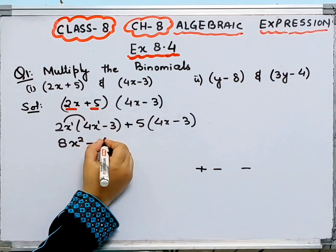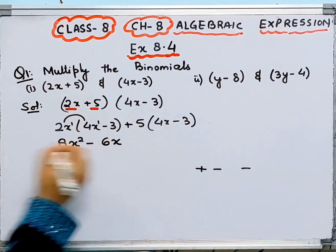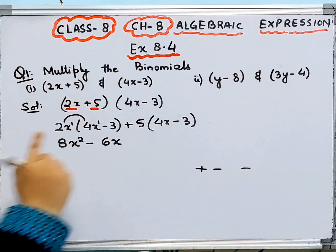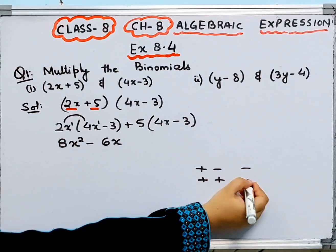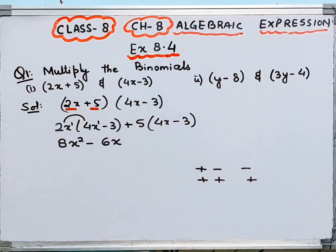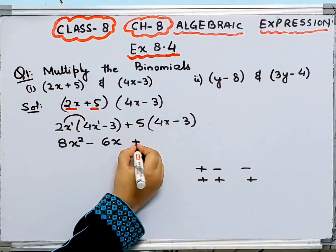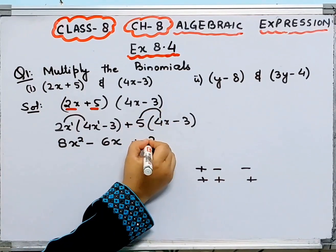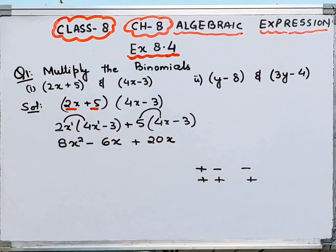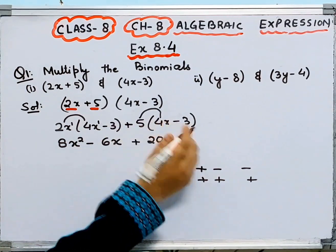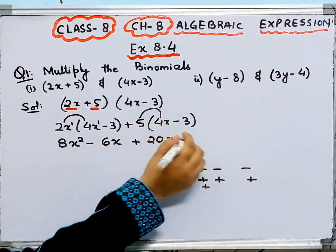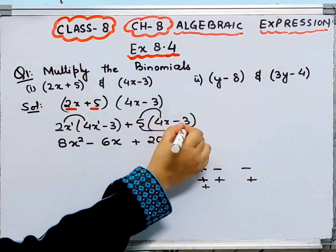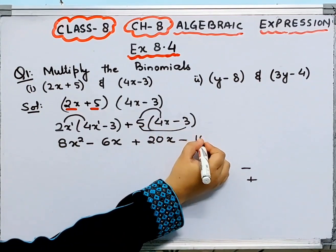2 times 3 is 6, and x to the power 1 — so we get minus 6x. Then, plus 5 times 4x: plus times plus is plus, so 5 times 4 is 20, giving us plus 20x. Then plus times minus: 5 times 3 is 15, so minus 15.